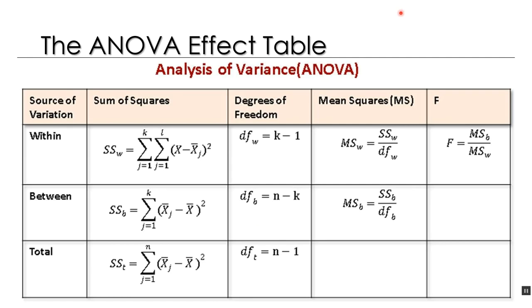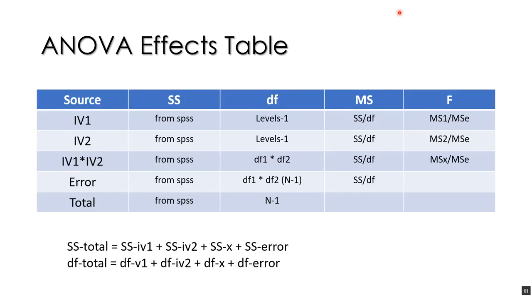Now let's move into the advanced part of the lecture. Here is a two-way between-subjects ANOVA effect table. Since we're using SPSS and not doing calculations by hand, we look for the sum of squares from the first independent variable — we get that from SPSS. The degrees of freedom are the number of levels of independent variable 1 minus 1.